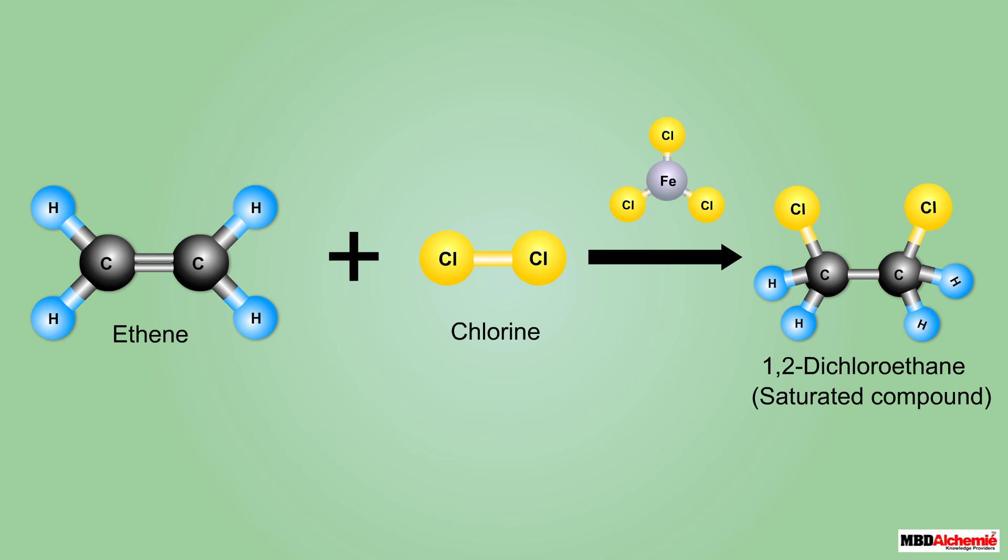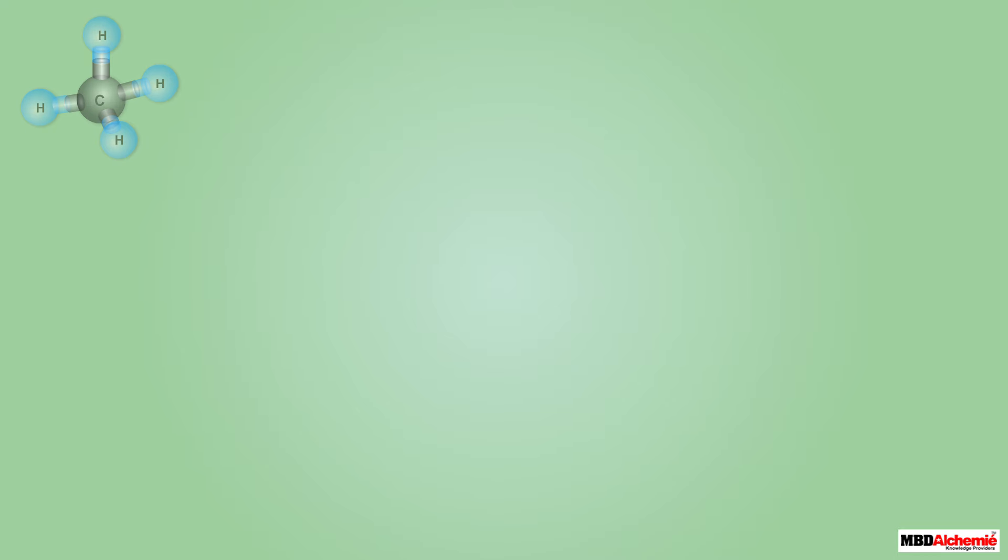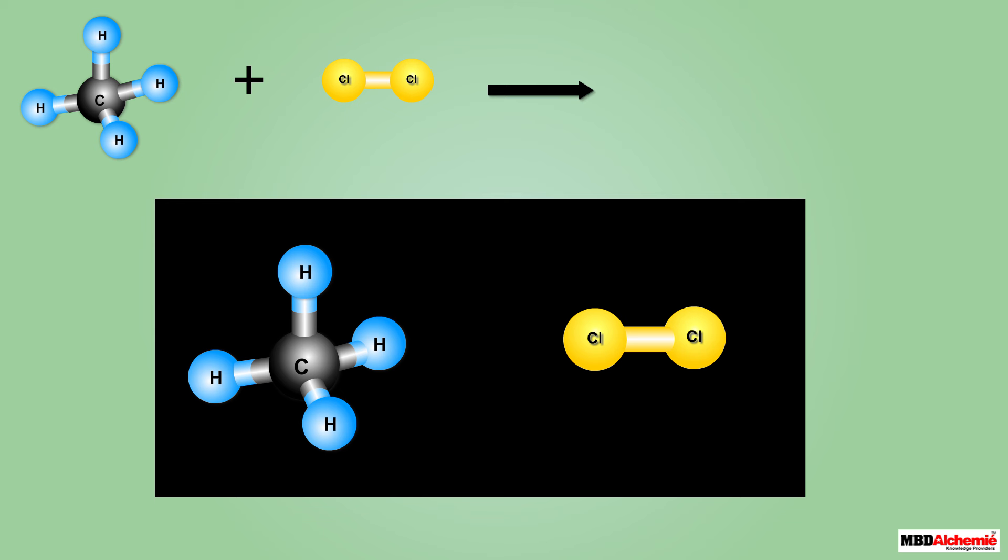The compound so formed is 1,2-dichloroethane, and it is a saturated compound.